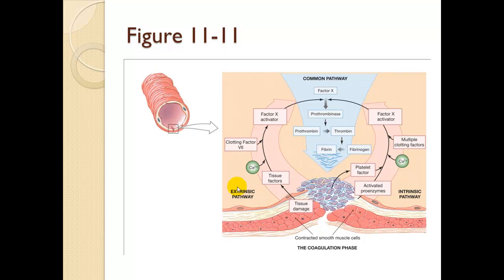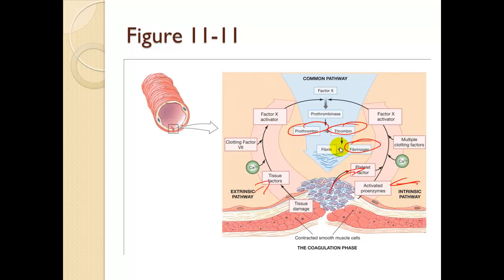To summarize: the extrinsic pathway is by the tissue; the intrinsic pathway is by the platelets. The common pathway goes from prothrombin to thrombin, fibrinogen to fibrin, forming the platelet-fibrin-thrombus polymer.